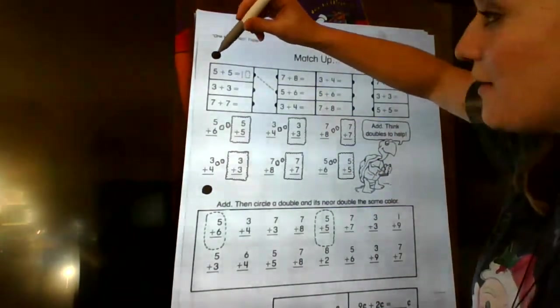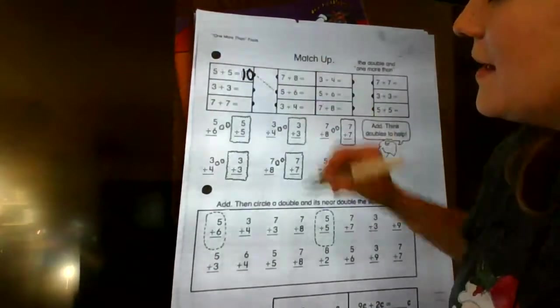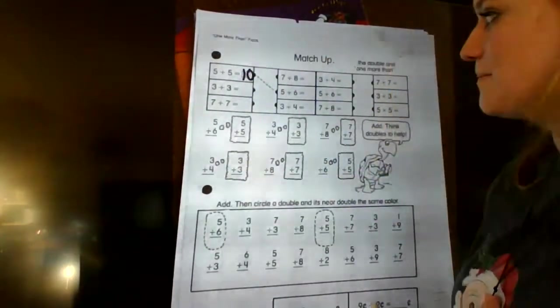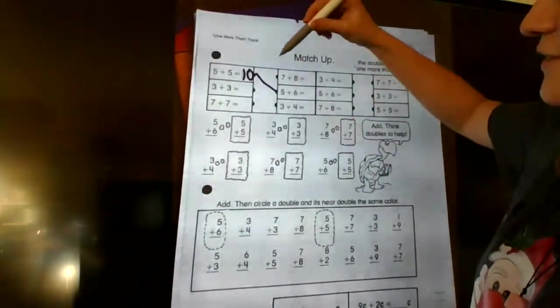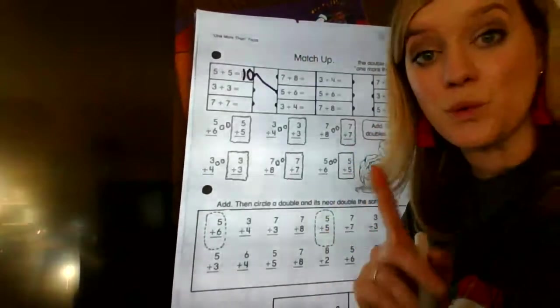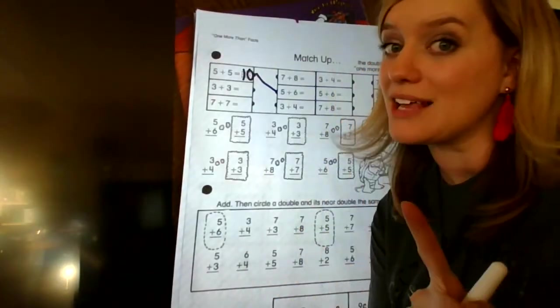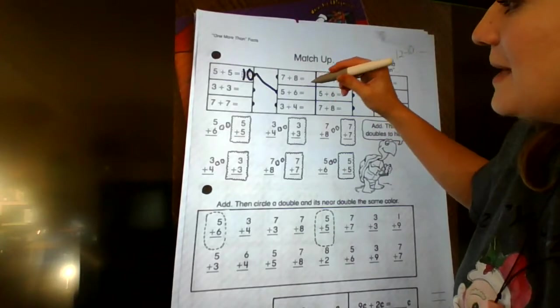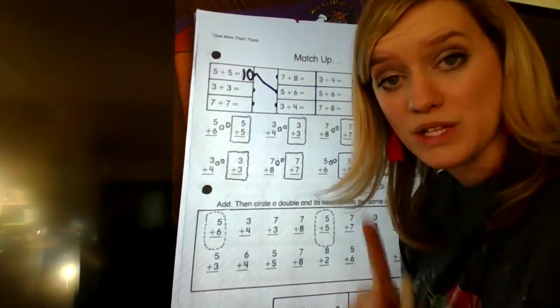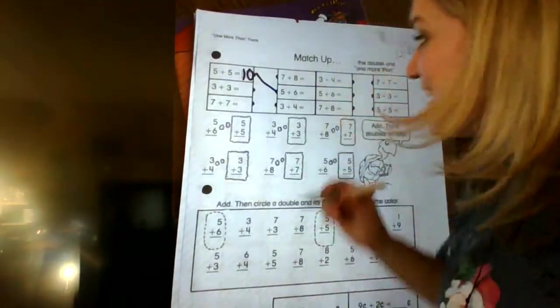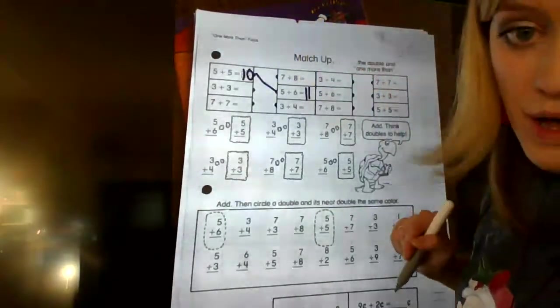So we are going to match up the double and then the double plus 1. So we have to not only solve the double, but we have to solve the double plus 1 and match it up to where it's closest at. So I'll show you. So look at this first one. It kind of helped us out. 5 plus 5, so two hands, equals 10. And we know that, but they did help us with it. They drew a line because they're showing you that this is its friend because look, 5 plus 6. There's the one more.